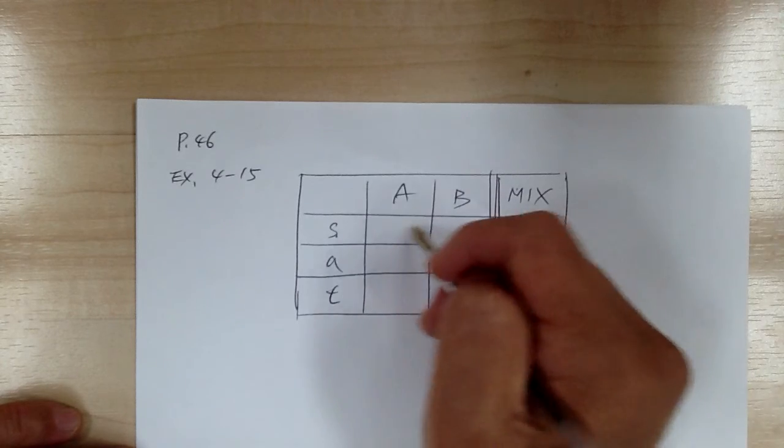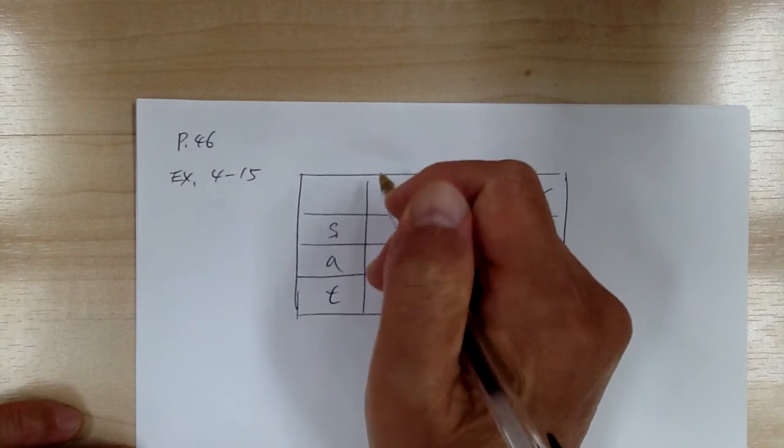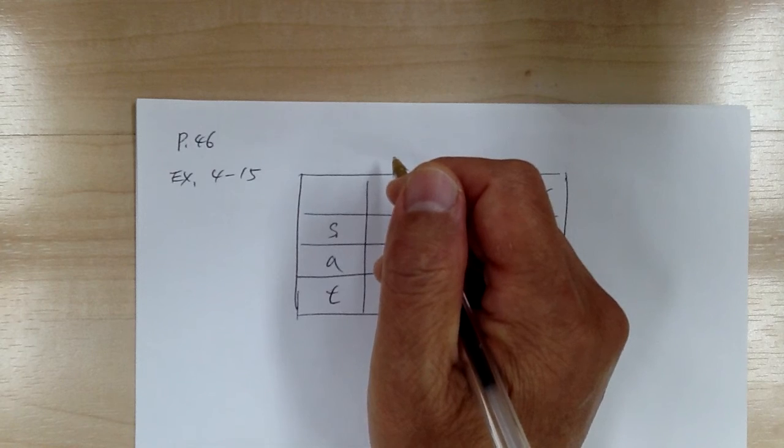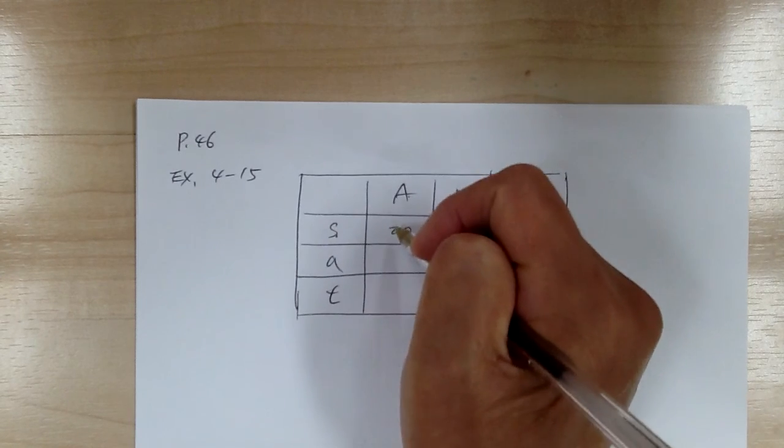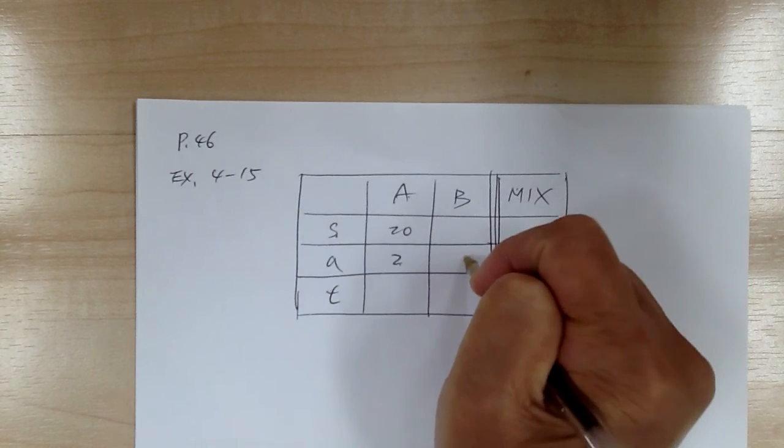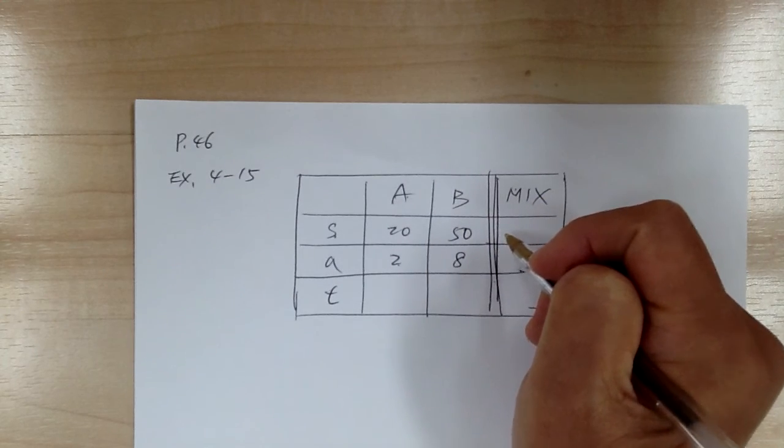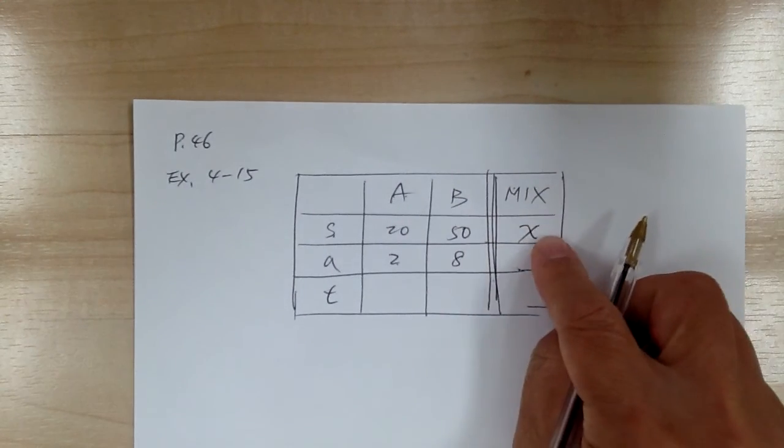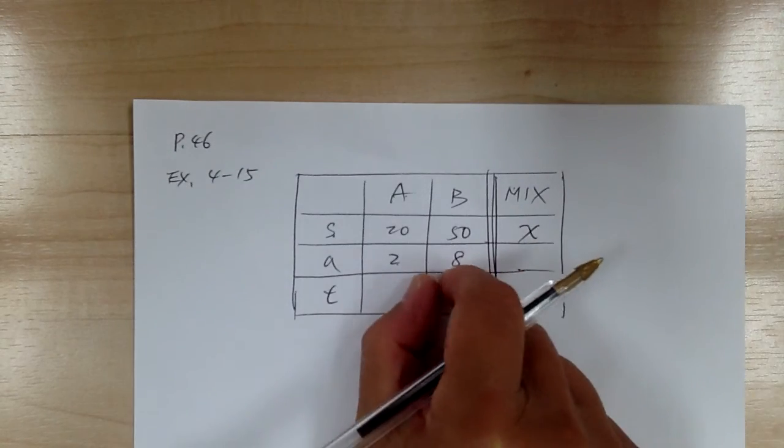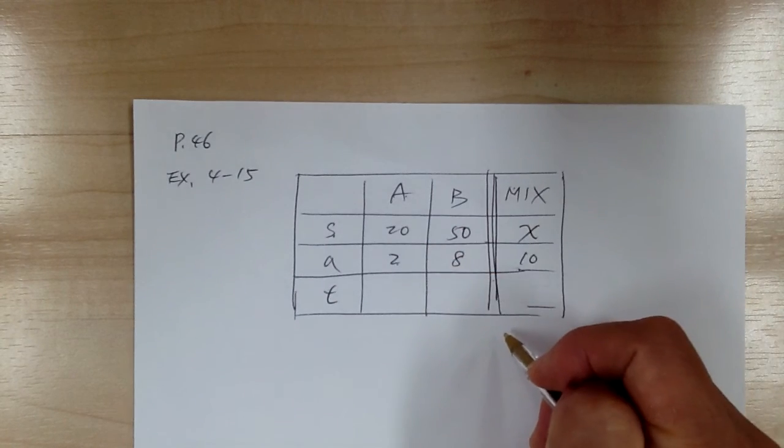So the strength of the first one is 20%. And amount is how many liters. So 2 liters of 20% mixed with 8 liters of 50%. And you want to find out what's the result. So you're looking for what is the result, what's the concentration or the strength. So when you mix these two together, you're going to have 2 liters mixed with 8 liters. You're going to get 10 liters.